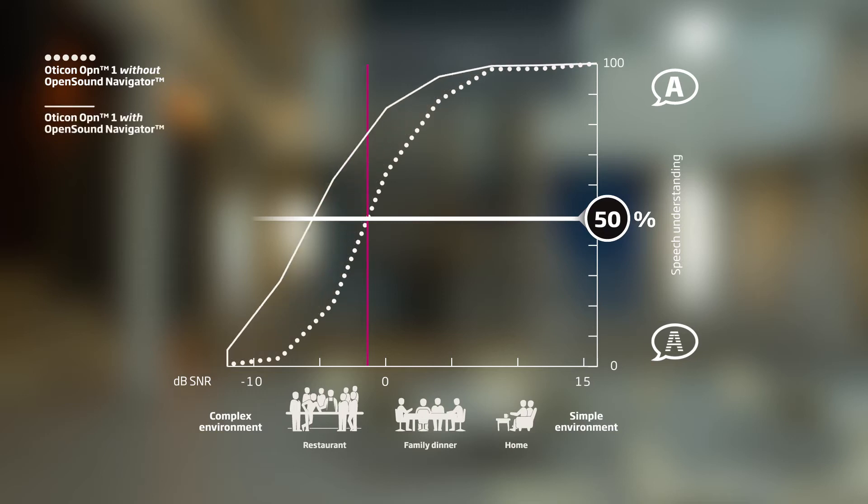Now the solid curve shows what happens when you turn on OpenSound Navigator. Now the signal-to-noise ratio corresponding to 50% is lowered by an impressive 5 dB. This means that with OpenSound Navigator users get access to environments where they were lost before. It allows hearing aid users to engage and to participate even in very noisy situations.